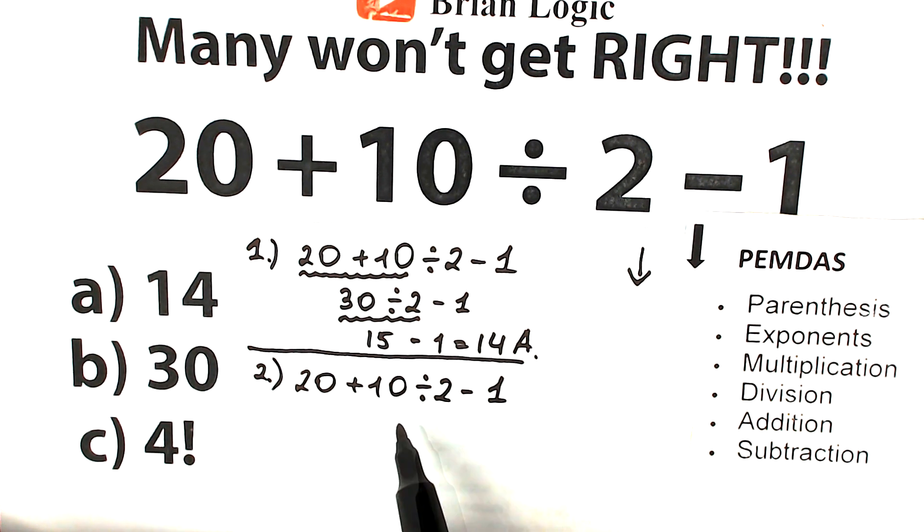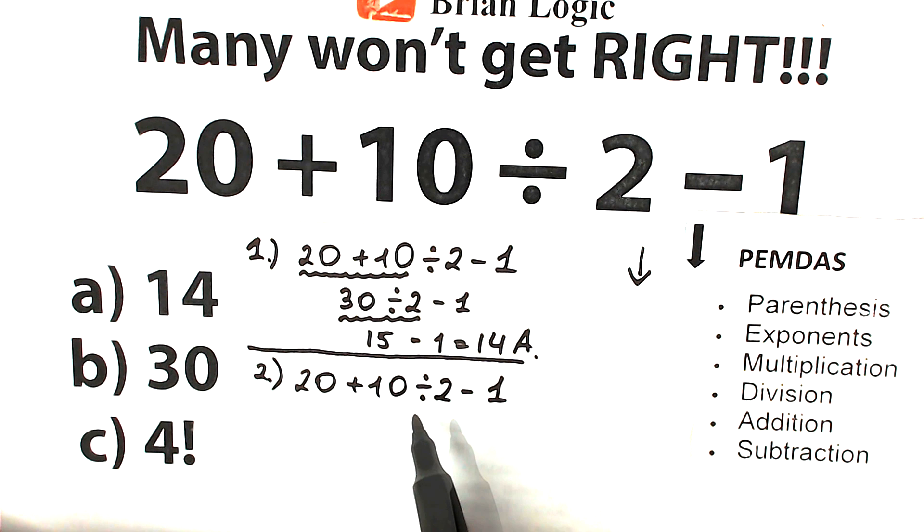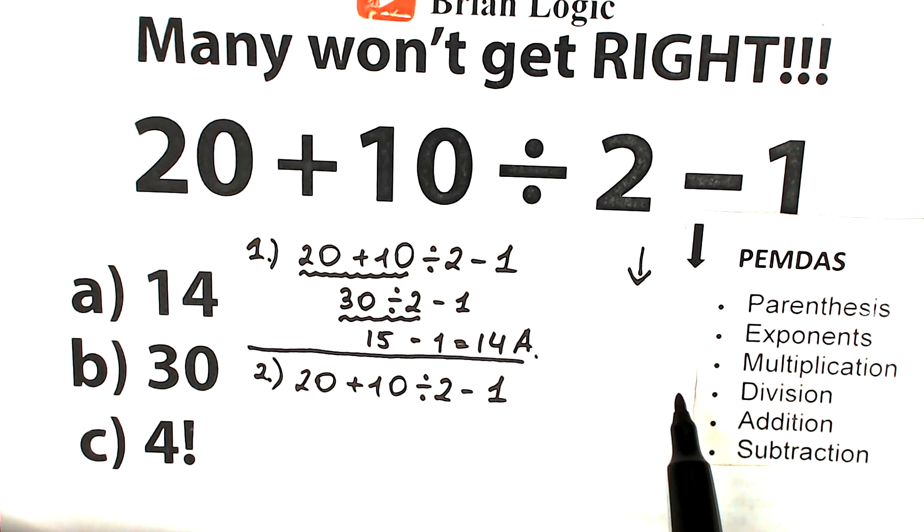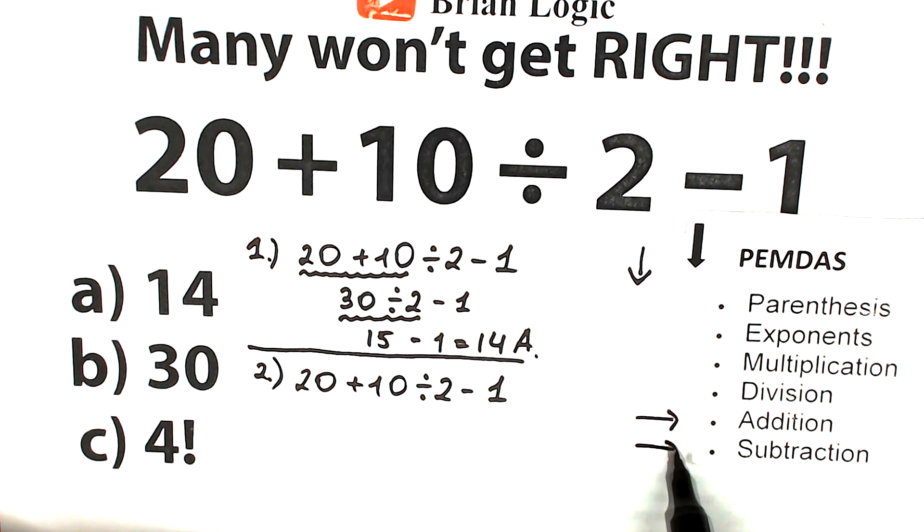We should scan what elements do we have in our challenge. We have addition, division, subtraction. Let's find where we have these elements. Addition we have right here, subtraction here, and we have division.